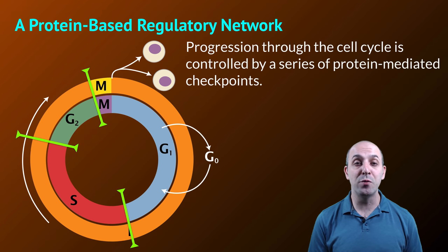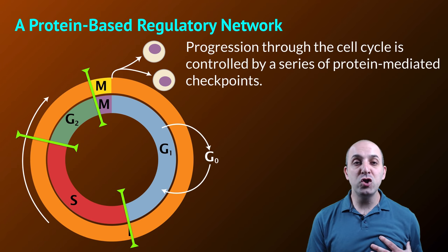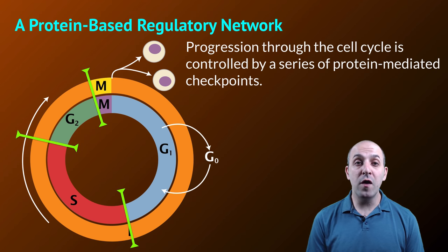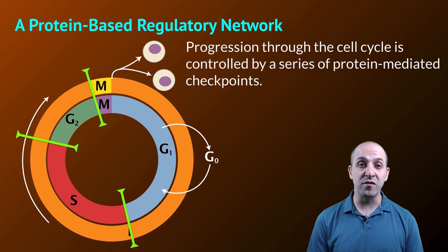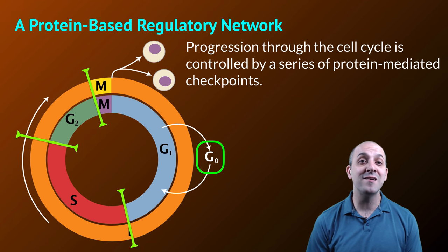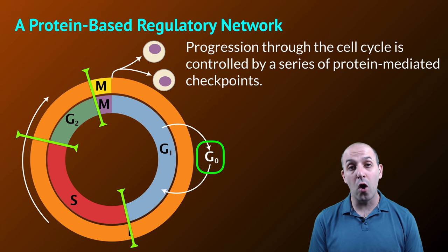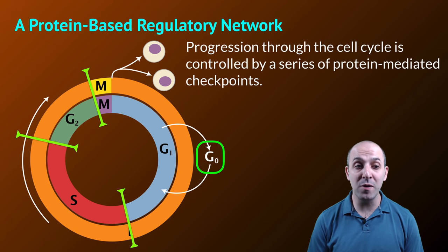Additionally, other proteins that would be preventing the cell from progressing have to not be present. The vast majority of cells in our body are actually never going to divide again. They're no longer moving through the cell cycle. They're stuck in a permanent non-dividing state, which we call G0. It's a permanent interphase.